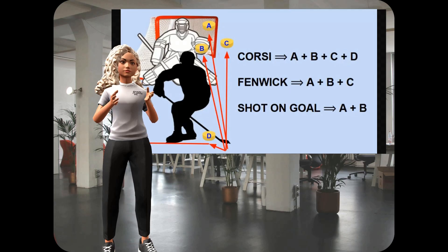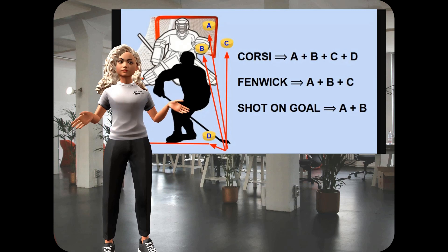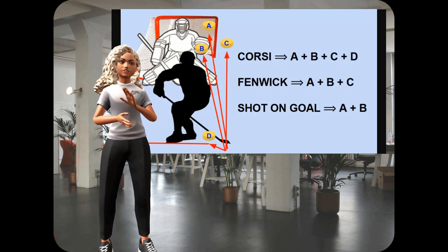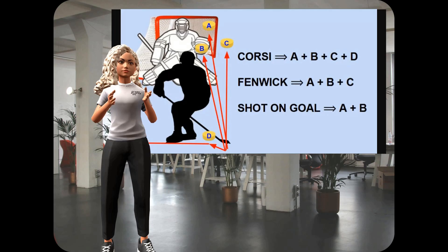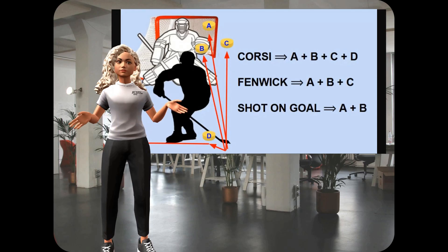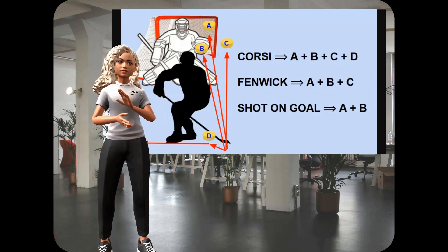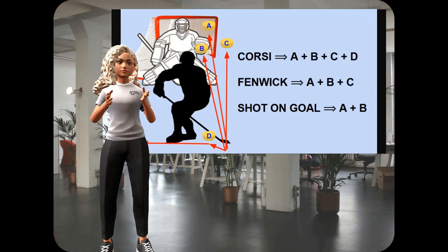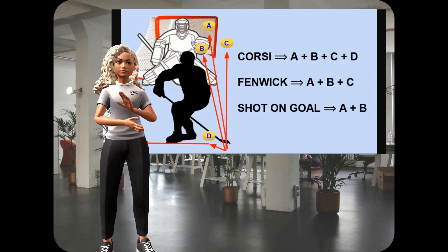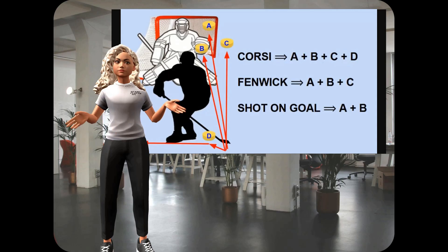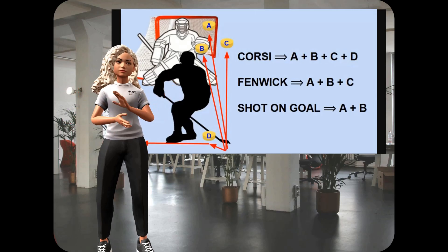Fenwick refines the Corsi number a little bit, because it removes blocked shots. It is just goals, saves, and misses. And Fenwick is a good indicator of how effective a team is being with their puck possession and their shot attempts, because the more perimeter style a team plays, the more likely that a shot is going to be blocked, or going to ricochet off of a body or a stick before it even gets to the net.